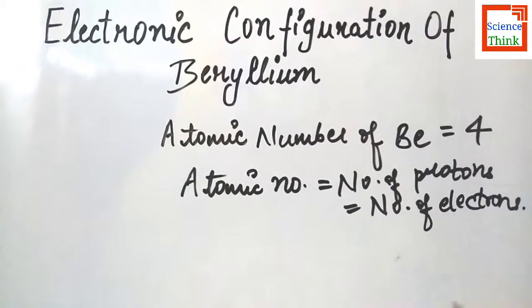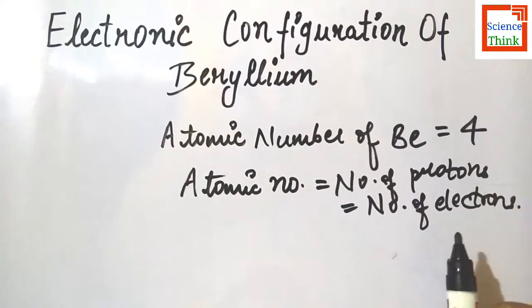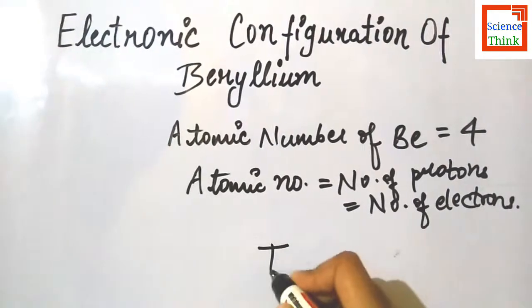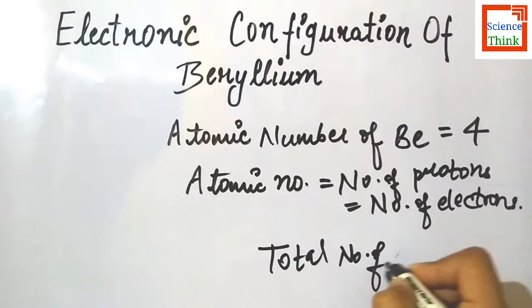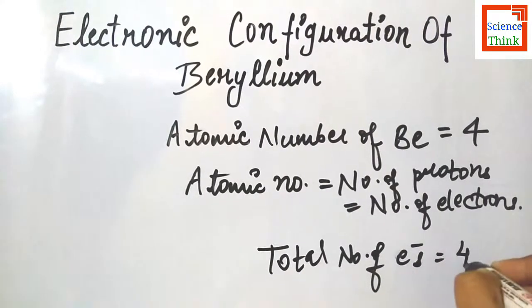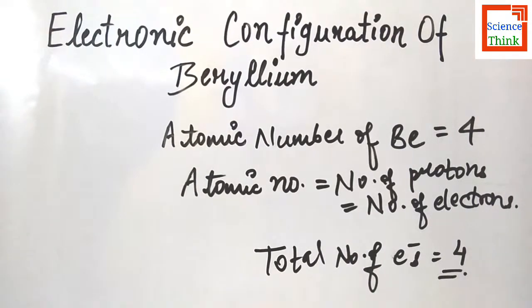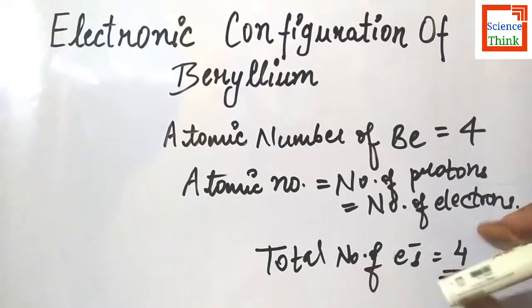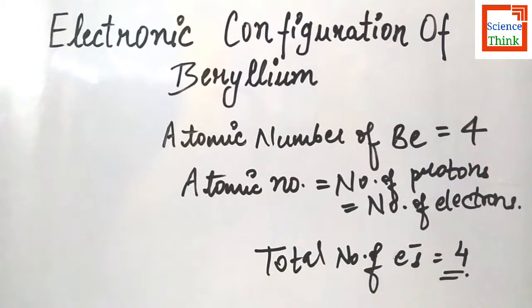So total number of electrons will be 4. So now we know the total number of electrons that beryllium has, now we have to find the electronic configuration of beryllium.